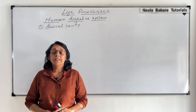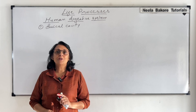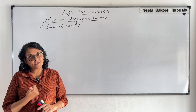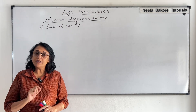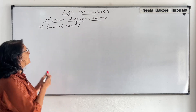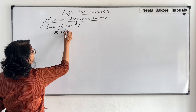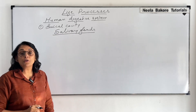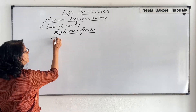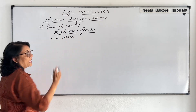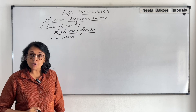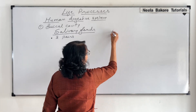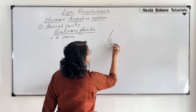We will now discuss salivary glands, which are the last part of our buccal cavity. In the buccal cavity we talked about palate, tongue, and teeth. So we are left with only the salivary glands. Salivary glands produce saliva and we have three pairs of salivary glands. We need to understand their location and what kind of secretion they release. Let us make a simple diagram to understand the location of these salivary glands.